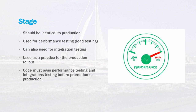The next area is staging, which should be identical to production. This is where performance and load testing is done — you want to see the software perform with the maximum number of users, and push it to a breaking point to find the maximum the system can support. Integration testing is also done here, testing against other systems that it interfaces with using scenarios as close to real-world as possible. Staging is the last step before production, and code must pass all performance and integration testing before being promoted.